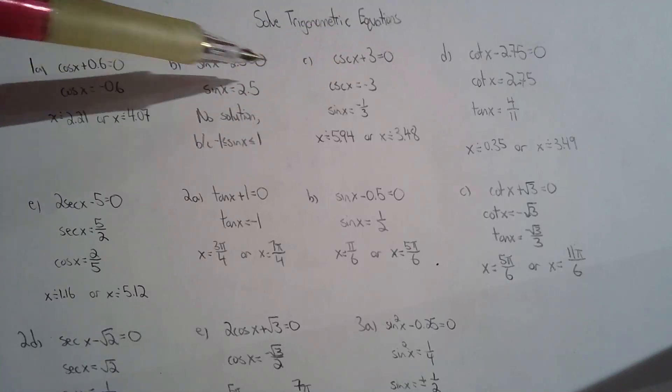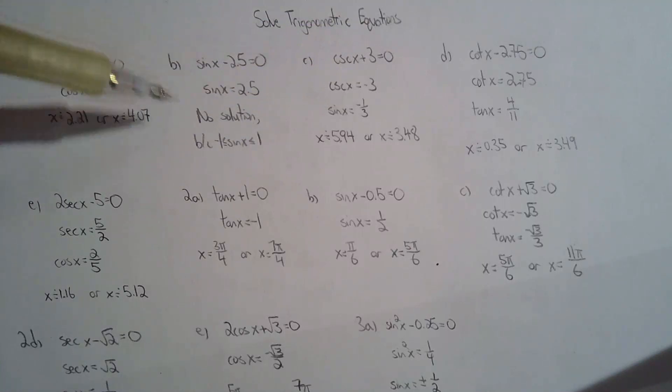For question one, just isolate the trig function and use a calculator. For cos x equals negative 0.6, I would just do inverse cos of 0.6 and then find the quadrant 2 and 3 answers by doing pi minus reference angle and pi plus.